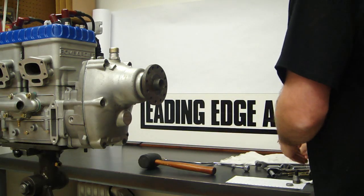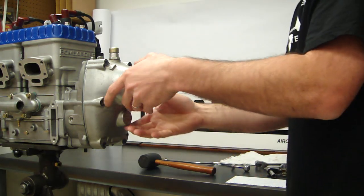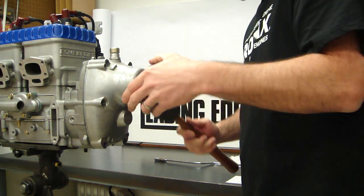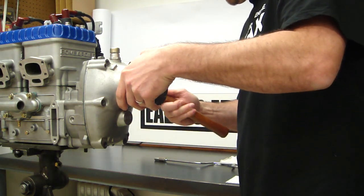We've got 6mm socket. Once these six fasteners are removed, you can now remove the outer gearbox housing. You may need to tap on the housing itself gently with the rubber mallet but do not tap on the propeller shaft.